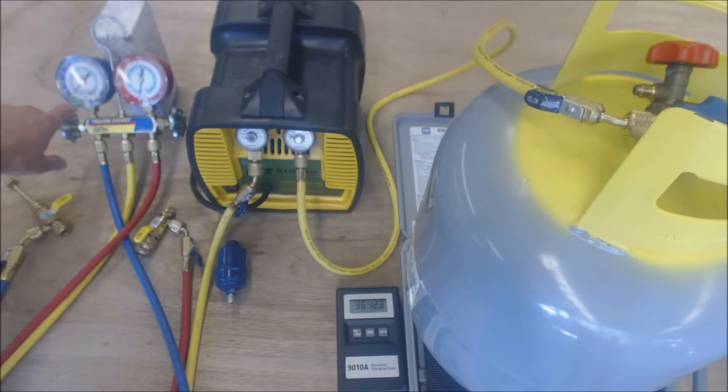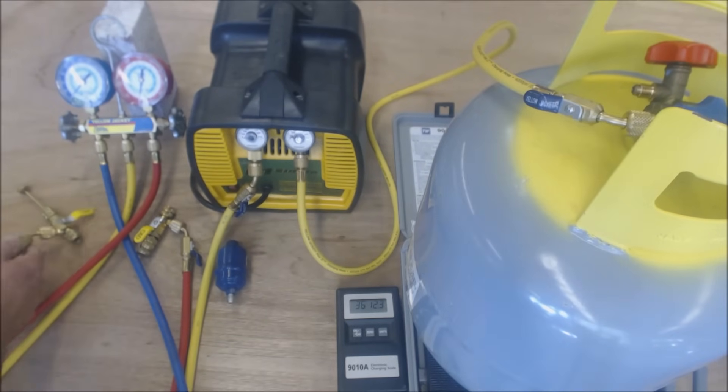You're sucking the refrigerant down, so if it's 70 degrees and the system's off and you're working with 134A, you're going to have right around 72 PSIG. It'll take a little bit to recover it down to that level, but that's how you do it. You can use these core removal tools so that it doesn't take as long and your Schrader valve is not in the way. You don't have to use these—you can just go ahead and connect in and just recover right through your Schrader valve. That's fine too.